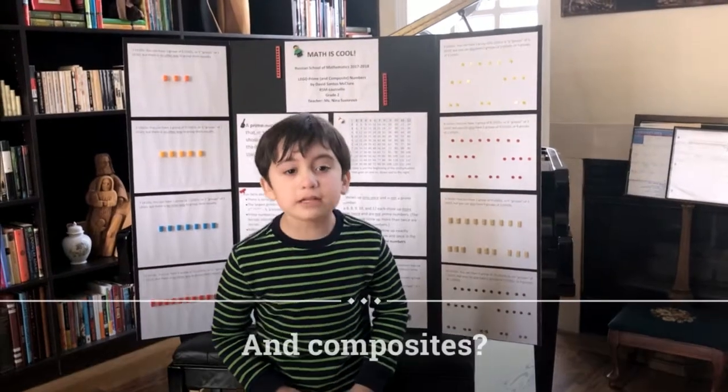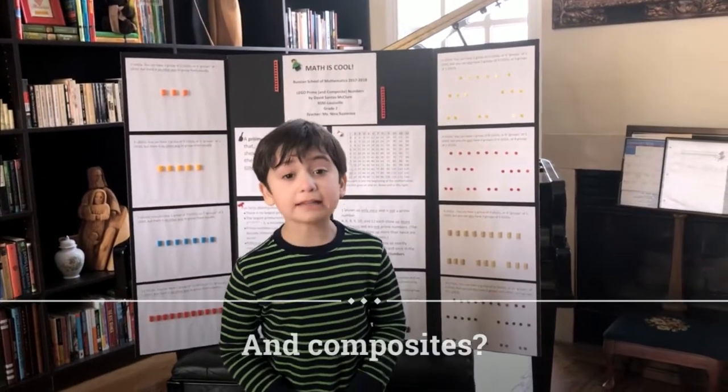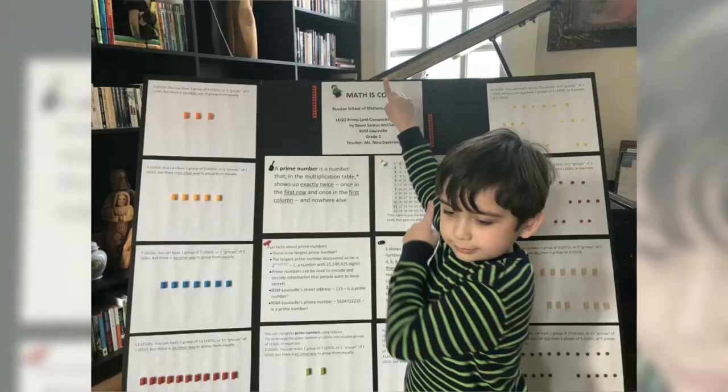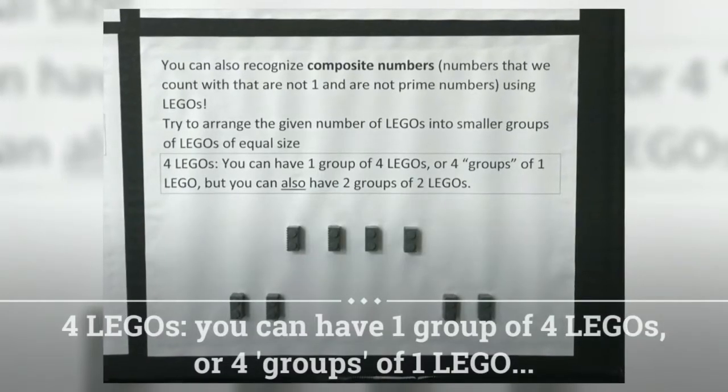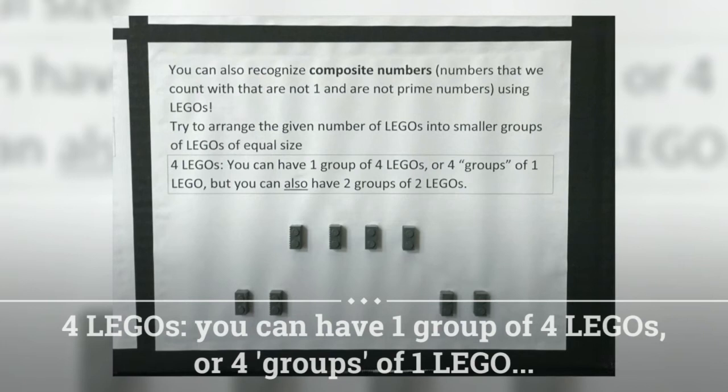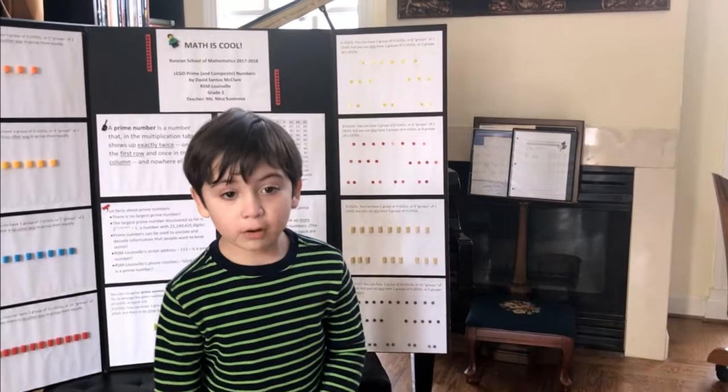You can also recognize composite numbers using Legos. Try to arrange the given number of Legos into smaller groups of Legos of equal size. Four Legos.